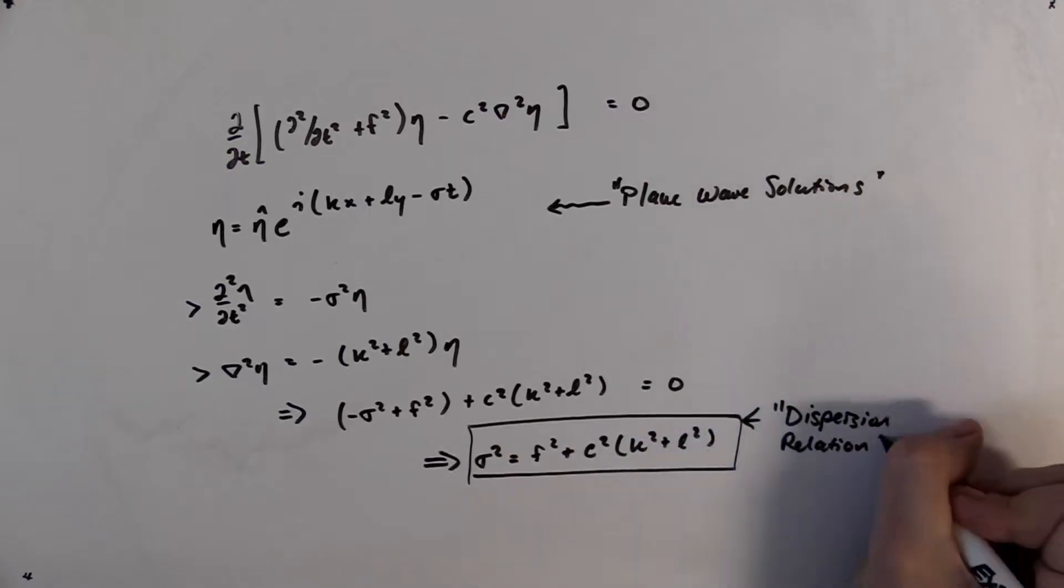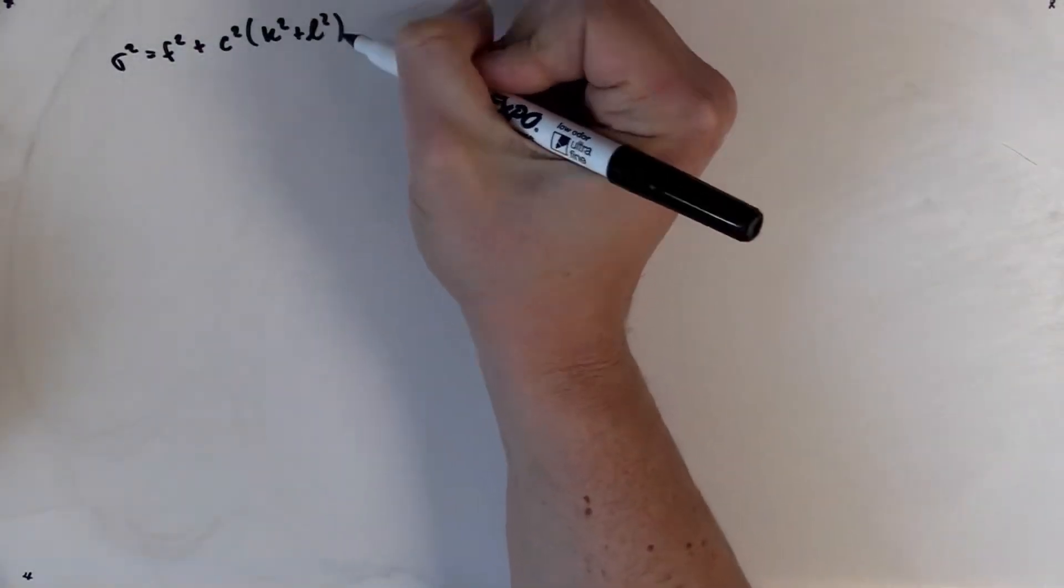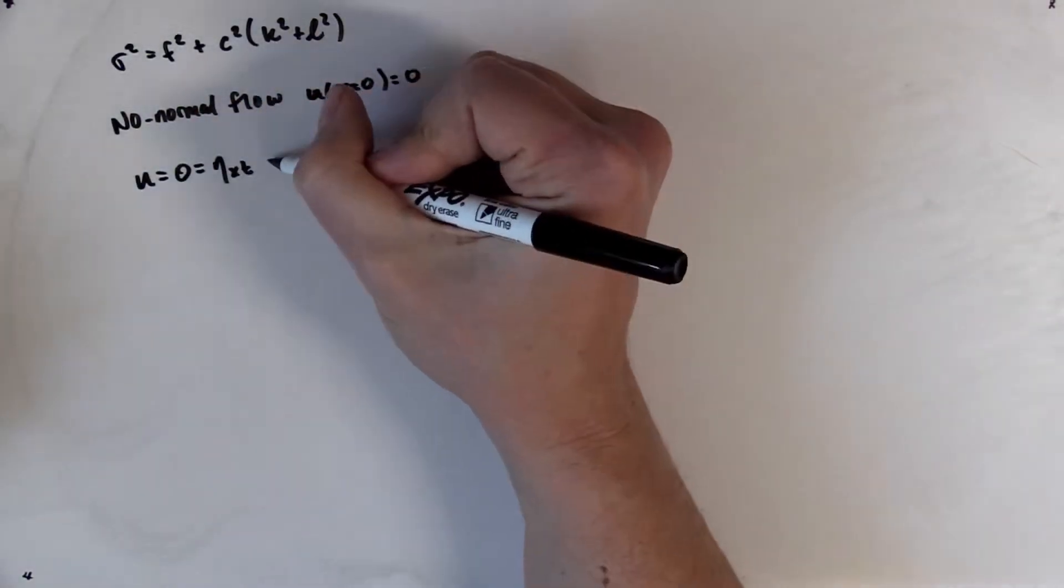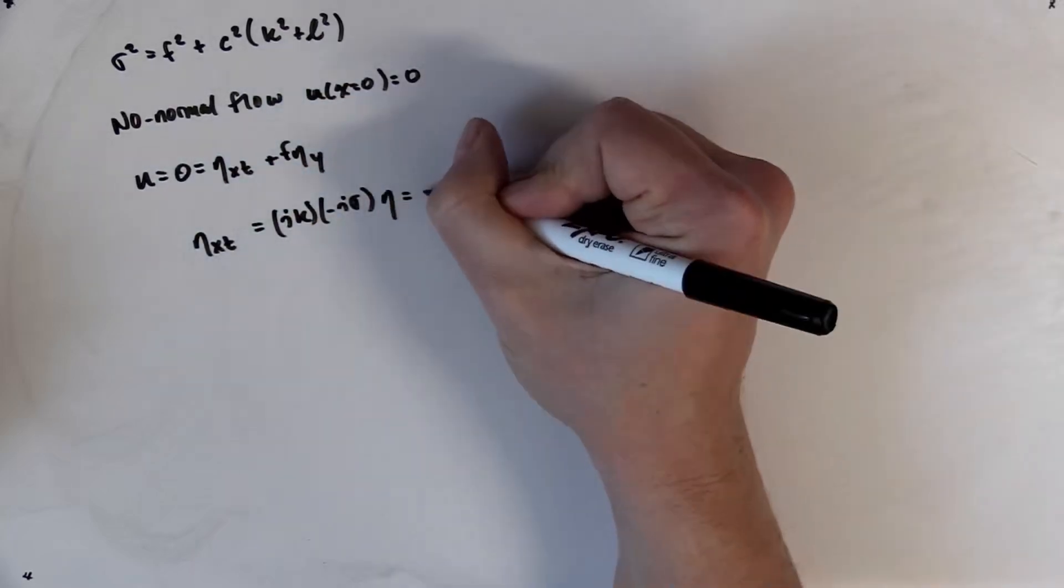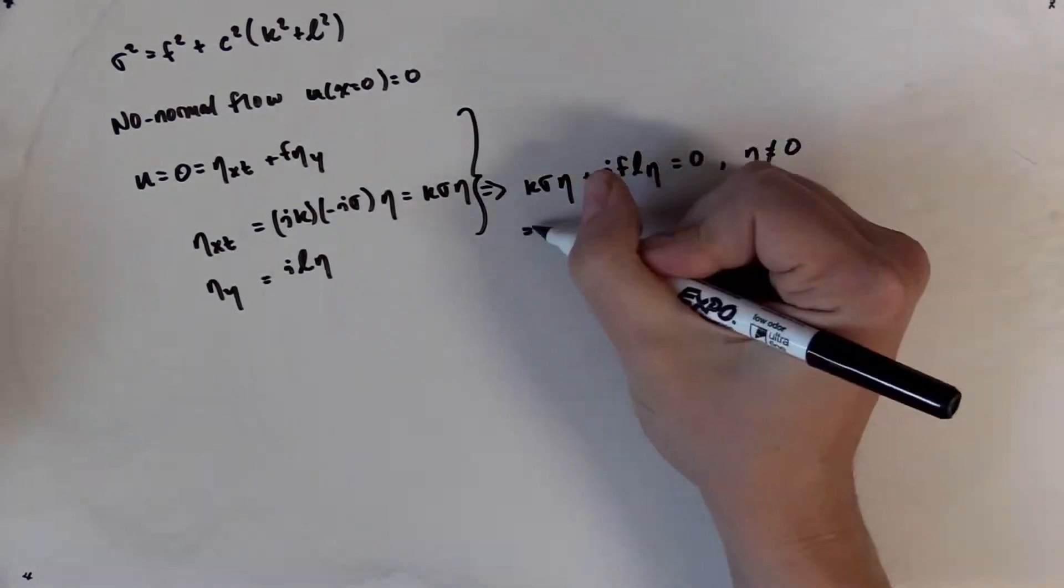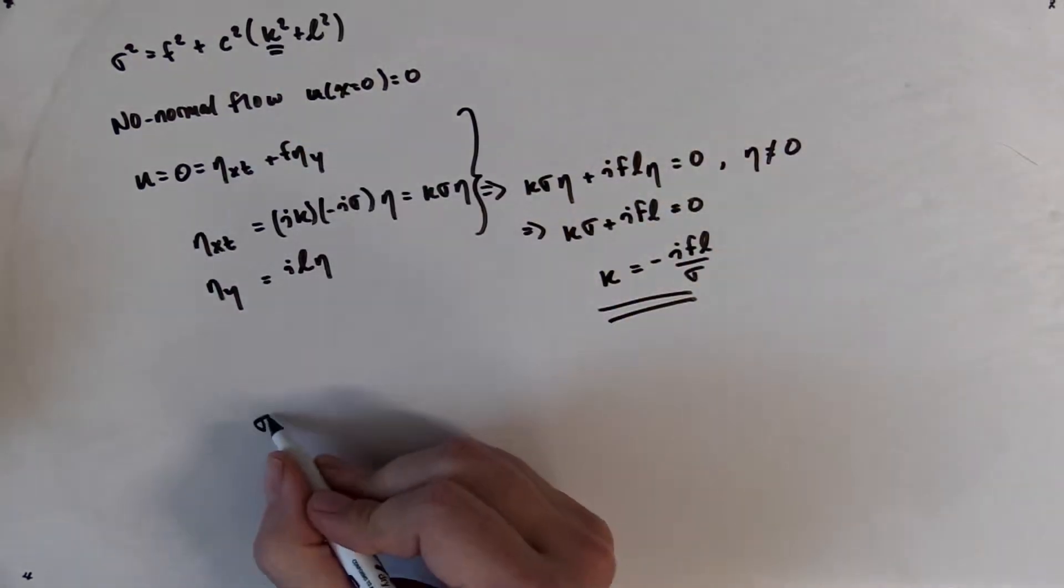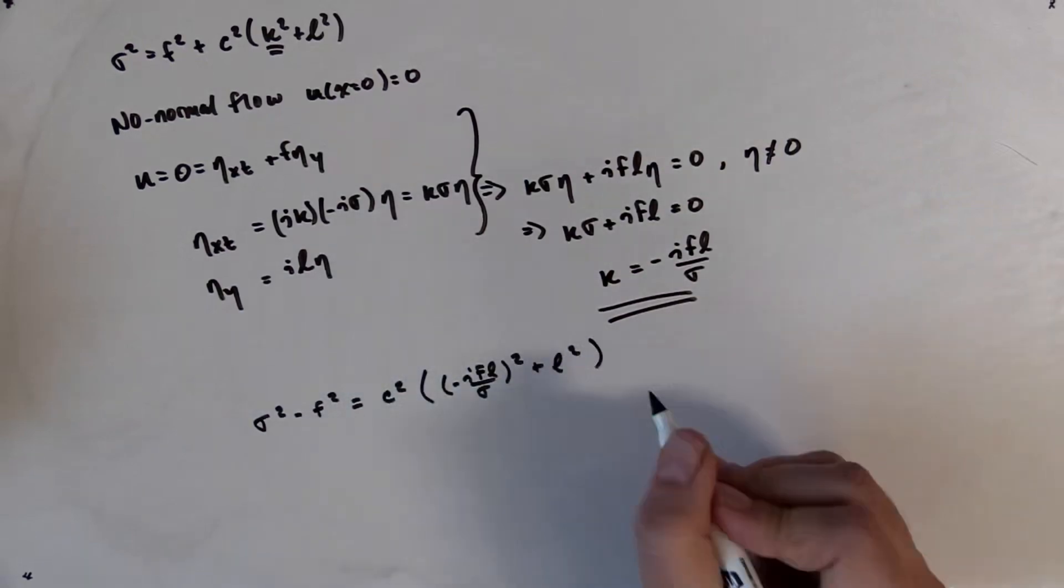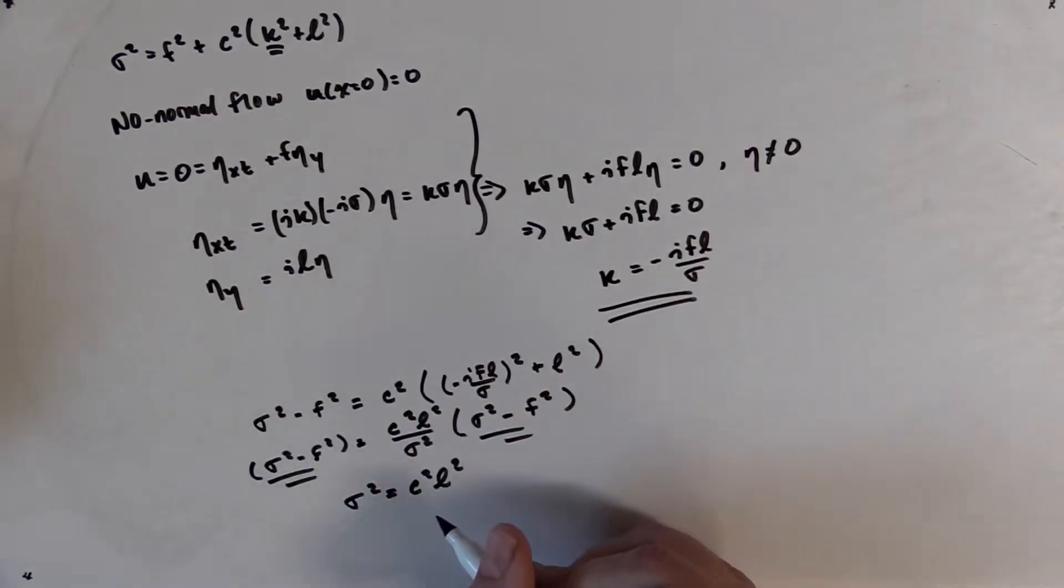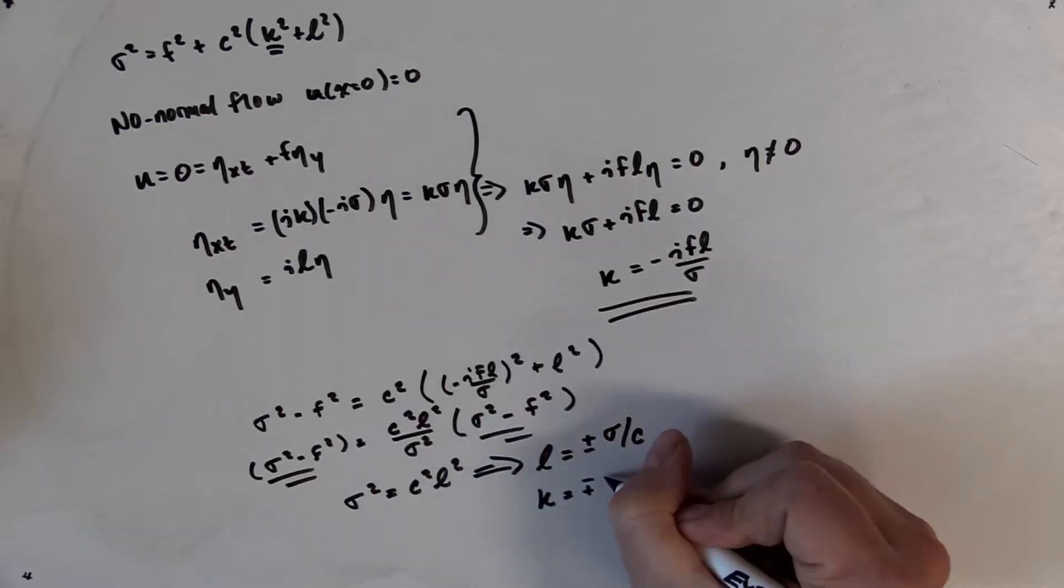Now, we want to impose the no-normal flow boundary condition. The no-normal flow condition will modify the dispersion relation for the inertia gravity waves and result in the dispersion relation for Kelvin waves. First, we say that u is equal to 0, and using the equation for u that we found previously when we decoupled the momentum equations, we have eta xt plus f eta y, which we then substitute in for eta, the plane wave solution. Combining these into the normal flow condition gives us k equals minus i f l on sigma. We can substitute this back into the dispersion relation for the inertia gravity waves and work out the dispersion relation that's left over. Upon simplification, we find that l is equal to plus or minus sigma on c. k is equal to minus or plus i f on c.